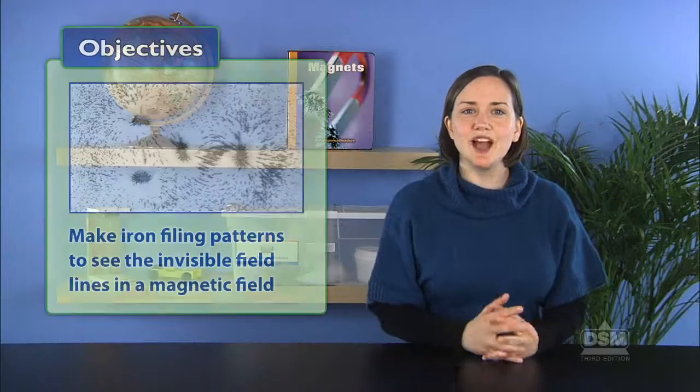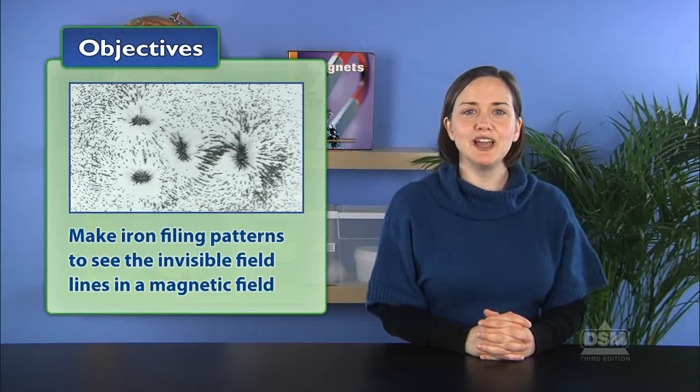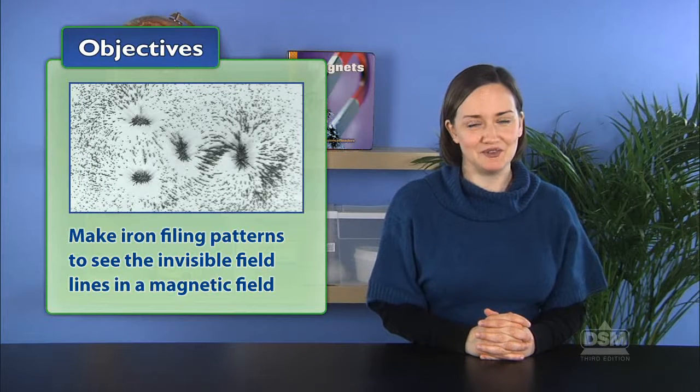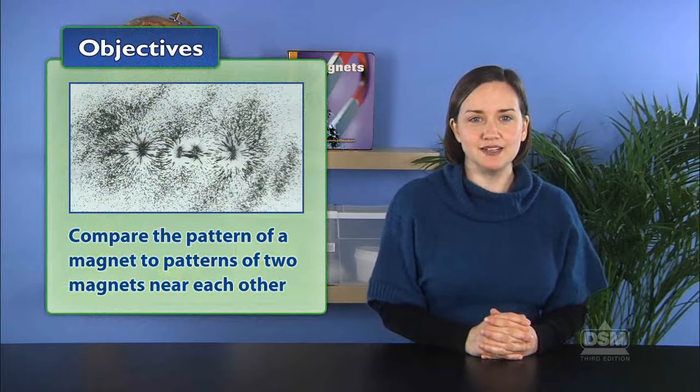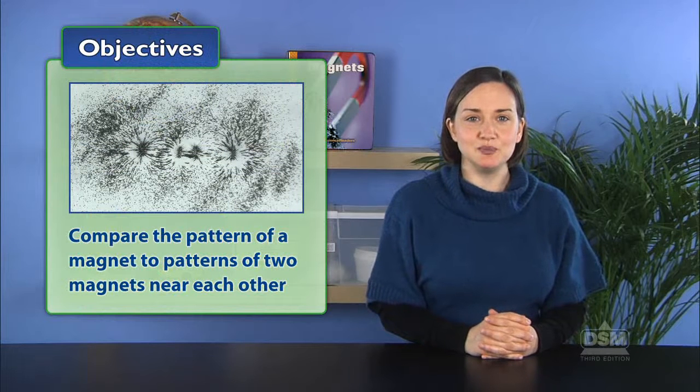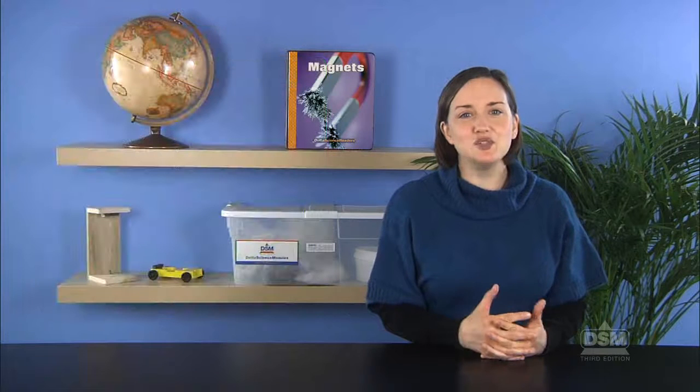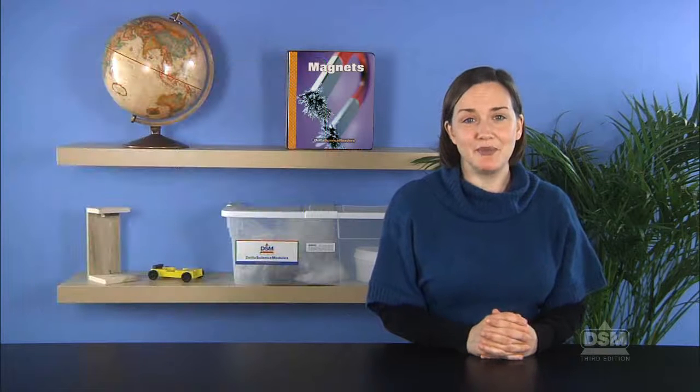In Activity 5, Magnetic Fields, students make iron filing patterns to visualize the invisible field lines in a magnetic field. Students then compare the pattern made by a single magnet to the pattern made by two magnets placed near each other. In this way, students discover the polarity of magnets.